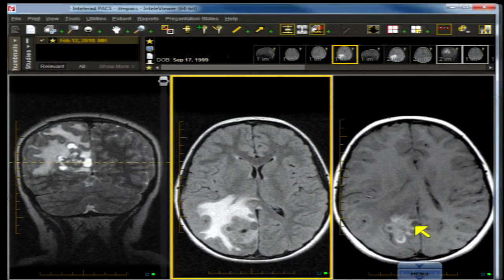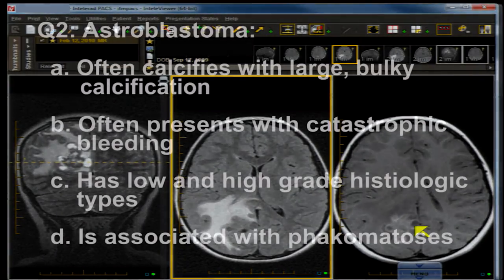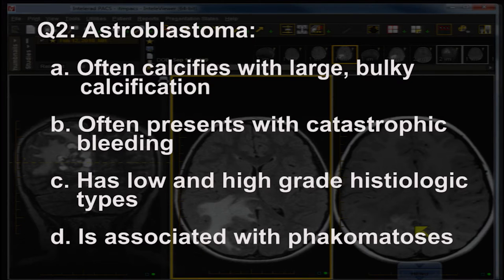Question 2: Astroblastoma — A. often calcifies with large bulky calcification. B. often presents with catastrophic bleeding. C. has high and low grade histologic types. Or D. is associated with phacomatosis.